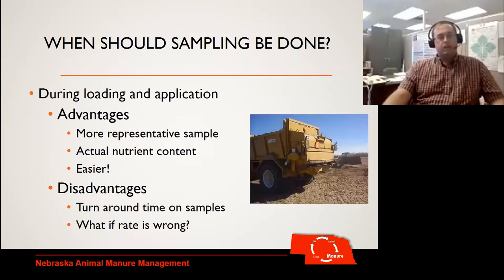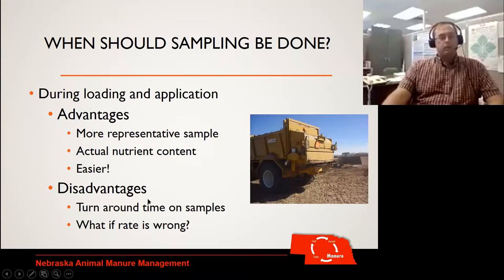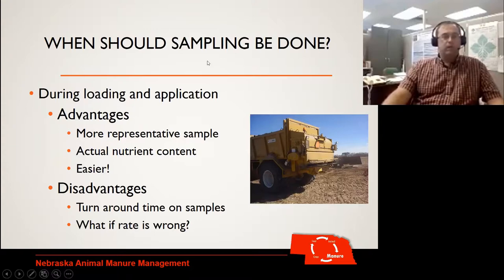The disadvantage of sampling during application is: how do I actually use that sample to adjust my rate? I can't, because it's going to take a week or two to get that sample back from the lab. So in this case we have to rely on our long-term average. That works fine for some situations, but in some cases that may not be the way your organization wants to do it. Another challenge: what if we're using a long-term average and those samples come back with considerably different nutrient content? Then we may have to go back and add fertilizer, or we may have over-applied based on what was actually there.